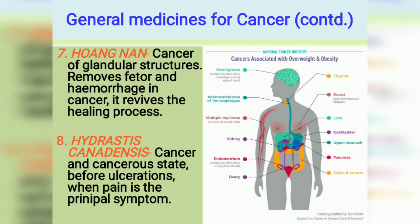Hydrastis Canadensis is a well-known remedy for cancer — for cancerous states before ulceration, when pain is the principal symptom. So when pain is the main symptom of a cancerous condition, Hydrastis is the medicine.